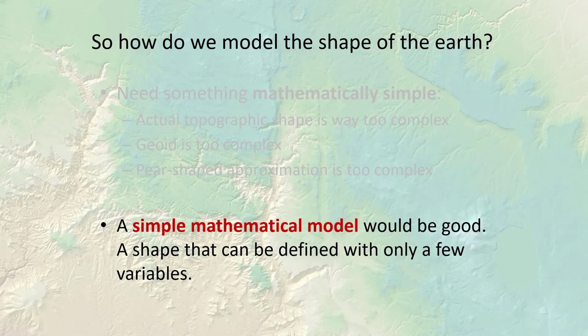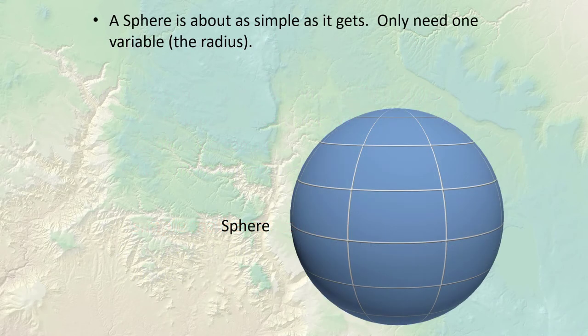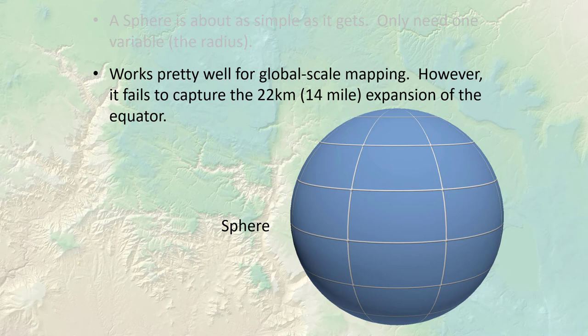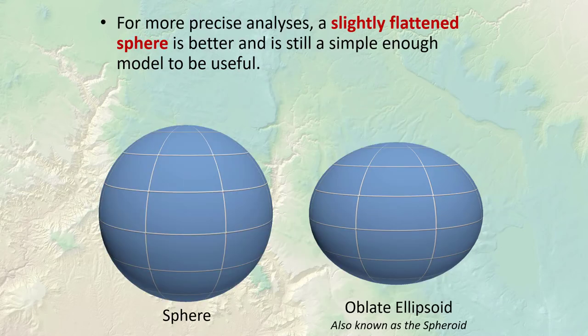The simplest model would be a sphere, defined by just one variable — a radius. A sphere works pretty well to model the planet and is easy to project from a sphere onto a flat surface. We do use the sphere sometimes, and it works well for global scale mapping. However, it doesn't capture the roughly 14-mile expansion at the equator, which does impact precise measurements of areas and distances. To get a little better, we usually use a slightly flattened sphere — still simple enough to be useful and more precise than a plain sphere.